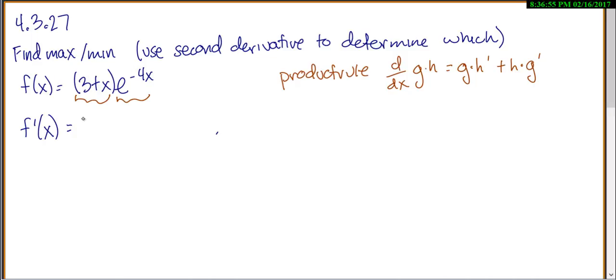So, to take the derivative, I do the first, which is 3 plus x, times the derivative of the second. Now, the derivative of e to the negative 4x. Anytime you take the derivative of an e, or an exponential, you keep it exactly the same because you're kind of doing a chain rule every single time.